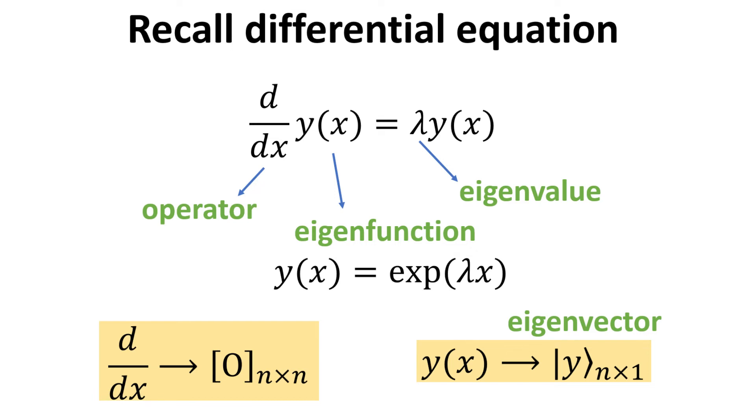In fact, the differential operator can be represented by an n by n matrix O, and the function y by an n by 1 vector, y ket, which we identify as the eigenvector.